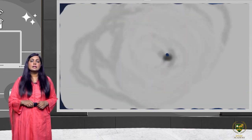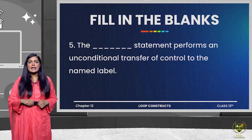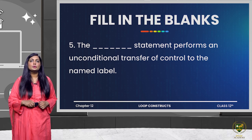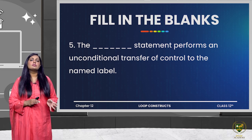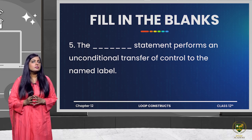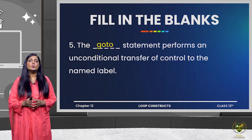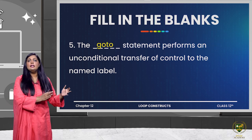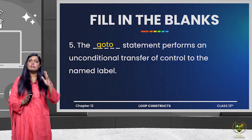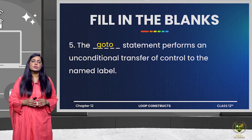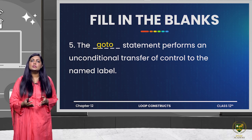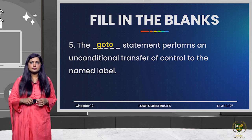The next question is: the dash statement performs an unconditional transfer of control to the named label. Such a statement that performs an unconditional transfer — we have only studied one such statement, which is the goto statement. With goto, control does not come back; it is an unconditional transfer of control to the specified label wherever we have transferred it.